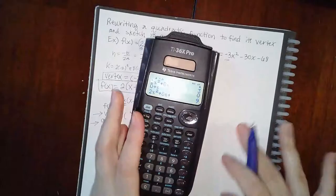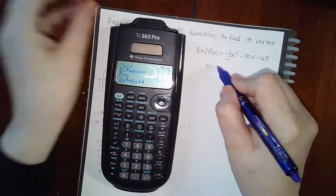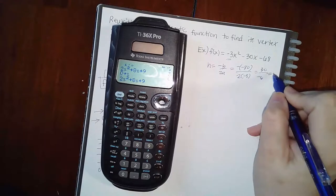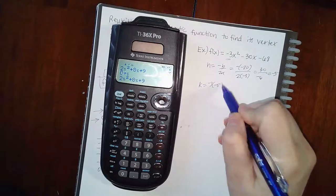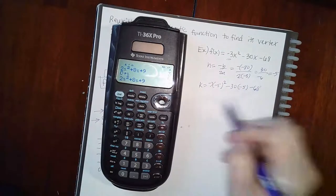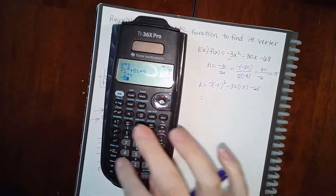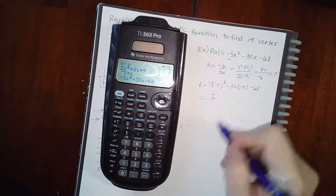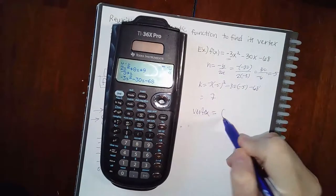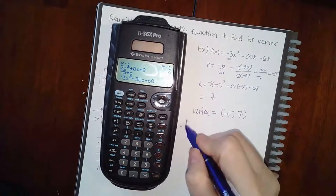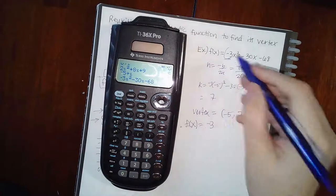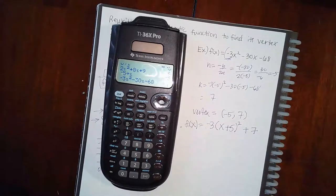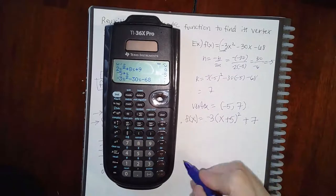For the next problem with a = -3, find h = -(-30)/(2·(-3)) = 30/(-6) = -5. For k, store -5 as x and compute -3x² - 30x - 68 to get 7. So the vertex is (-5, 7) and the vertex form is -3(x - (-5))² + 7, which becomes -3(x + 5)² + 7. Note: if k were negative seven, the last term would be minus seven.